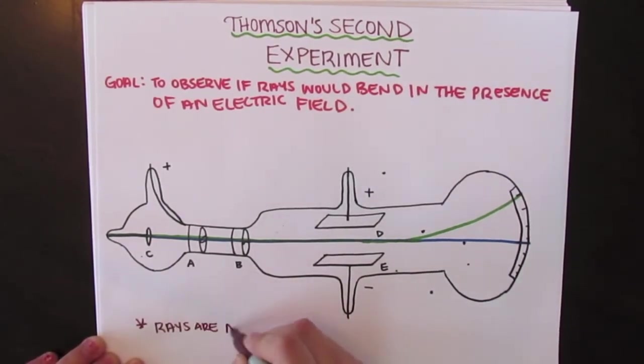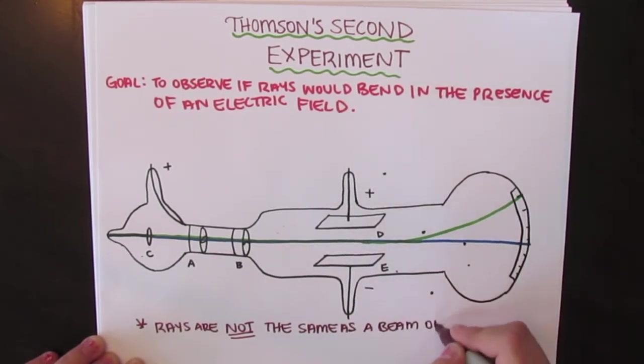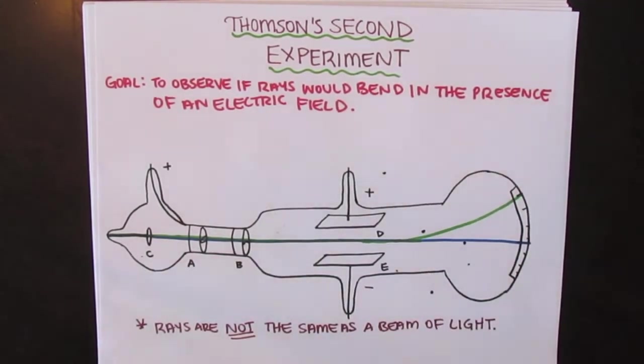This is important, as it shows that the rays are not the same as a beam of light, as light is not bent by electric or magnetic fields.